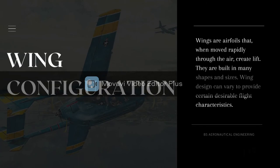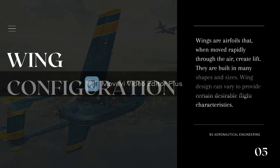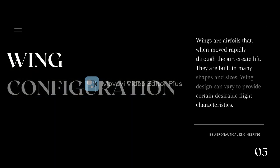Wing Configuration. Wings are airfoils that, when moved rapidly through the air, create lift. They are built in many shapes and sizes, and wing design can vary to provide certain desirable flight characteristics. Wings can be symmetrical, asymmetrical, curved, straight, or narrow, depending on the build of the aircraft or what they are designed for.